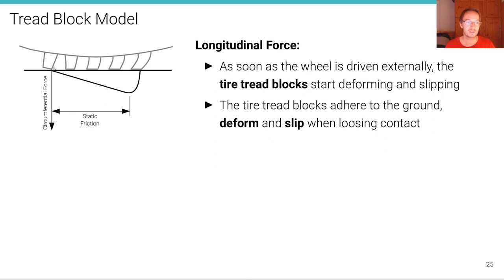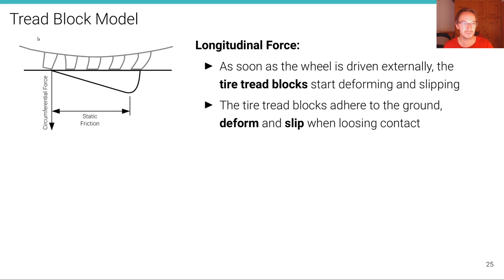You can see from this figure that the tread blocks don't all look the same. Only one tread block here is in its canonical shape — the others are deformed versions of it. Why are they deforming? As soon as the wheel is driven externally — as soon as we apply a circumferential force to that wheel — these tread blocks start deforming and slipping.